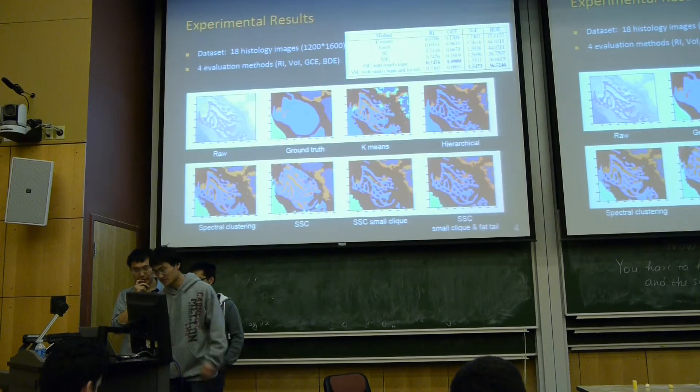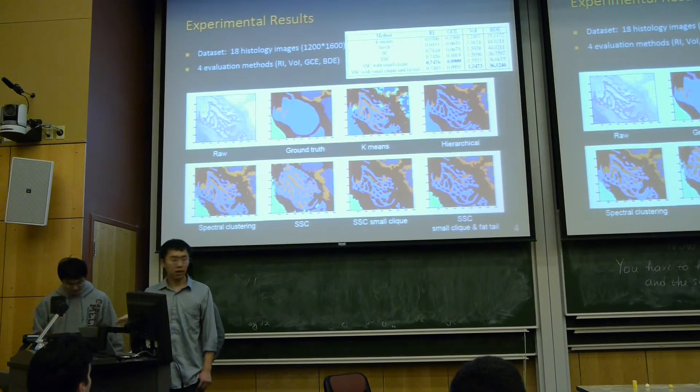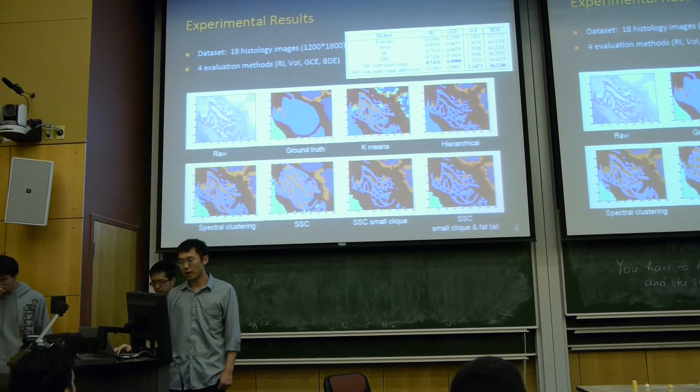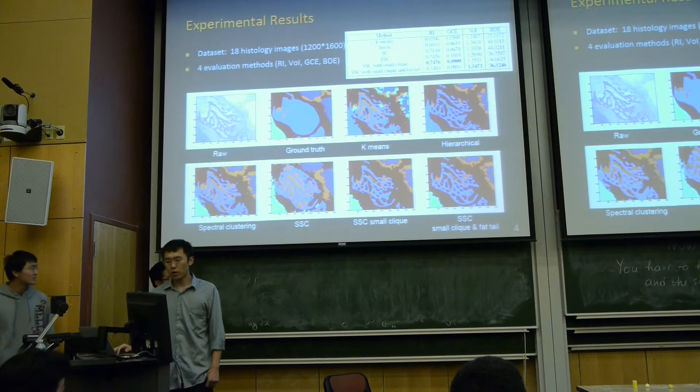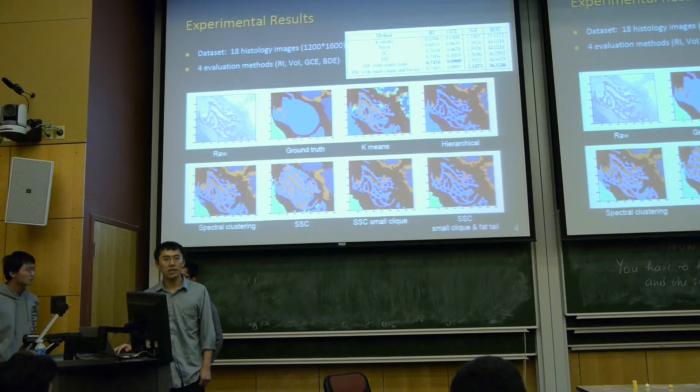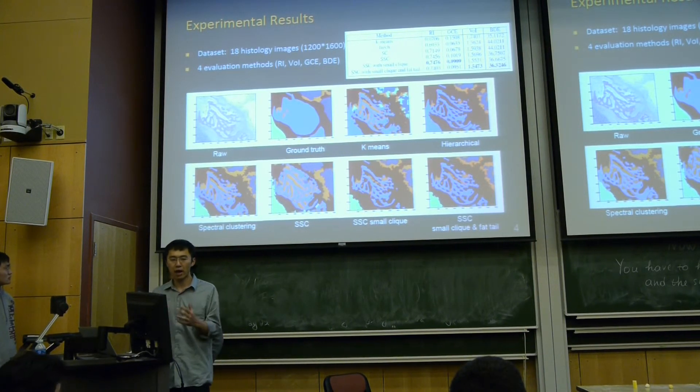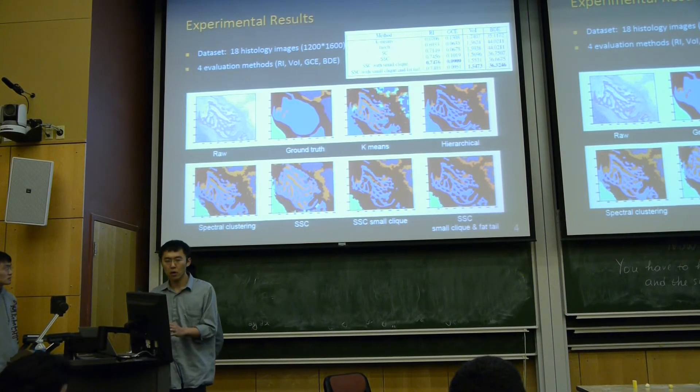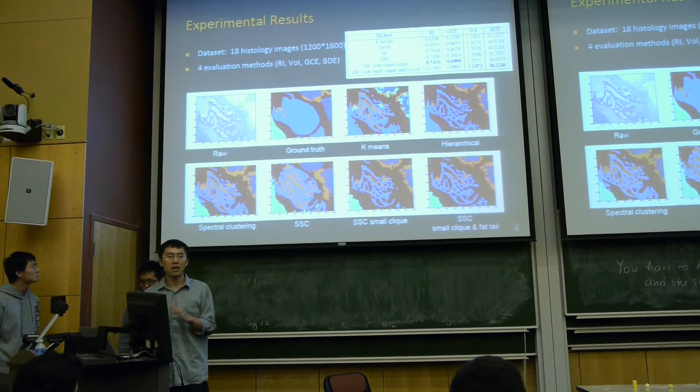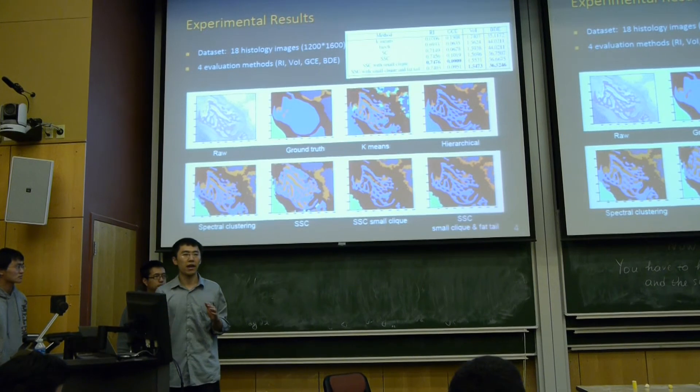Here is some result. We did experiments on 18 histology images with size 1200 times 1600. However, to evaluate our results is not an easy task. For image segmentation, we have all these labels and ground truth. There are so many things we can evaluate, like pixel by pixel, boundaries, segmentation size. There are so many things to look at, but none of these will give us enough confidence to tell which one is better.